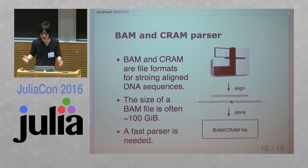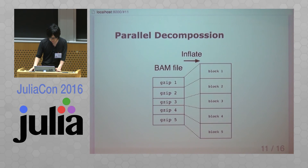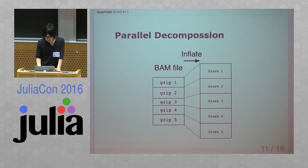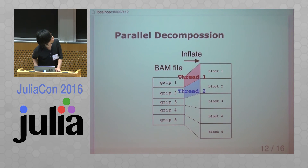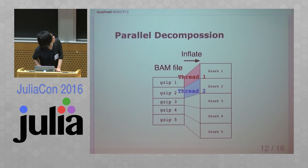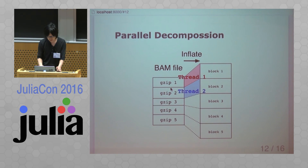How can we make it faster? Parallelizing is one solution. A BAM file is a concatenated GZIP file, so you can parallelize decompression using the BGZF library with multiple threads — red blocks and blue blocks decompress GZIP blocks in parallel — and you can improve performance significantly.